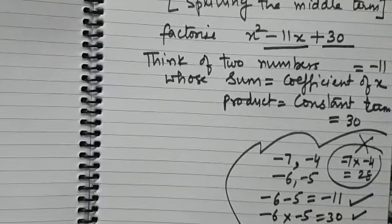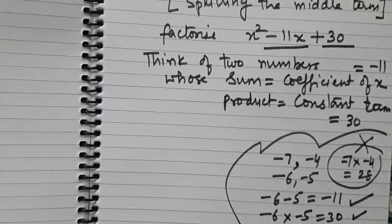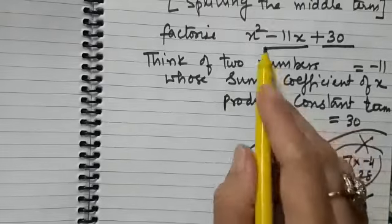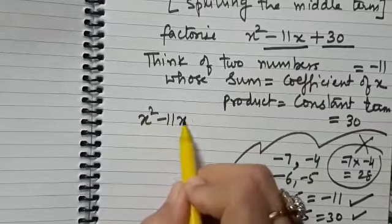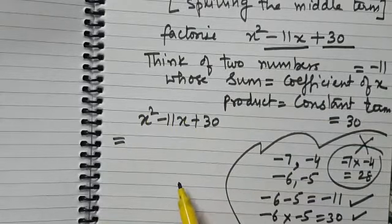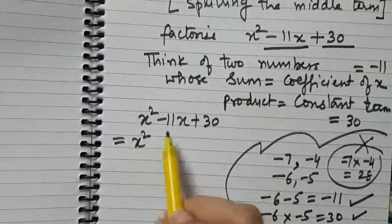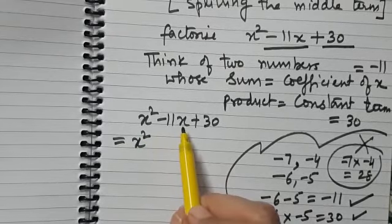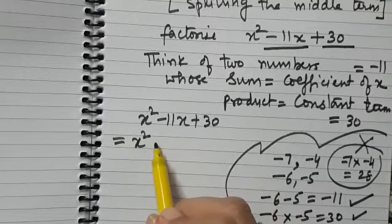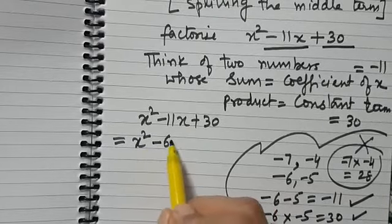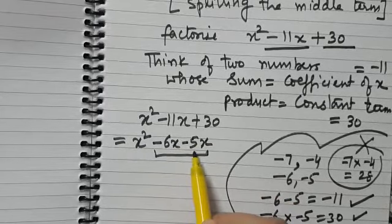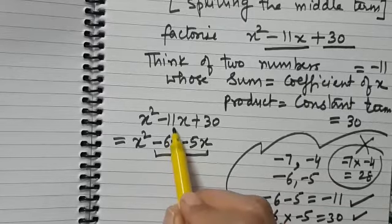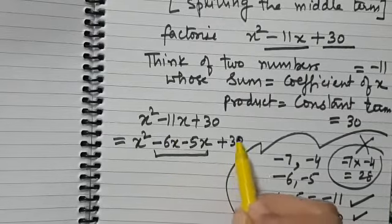Now let's see how we use these two numbers. We write x² - 11x + 30, and we split the middle term: x² minus 6x minus 5x plus 30. You can verify that minus 6x minus 5x gives us minus 11x.